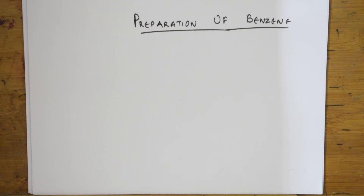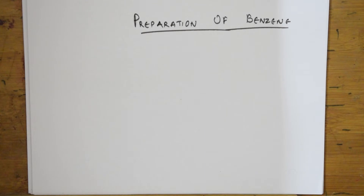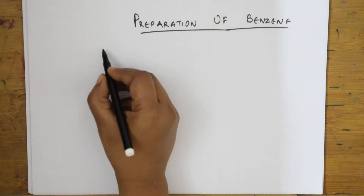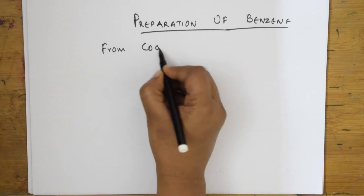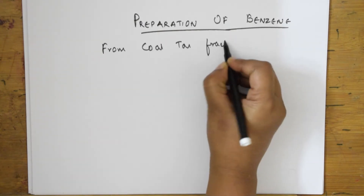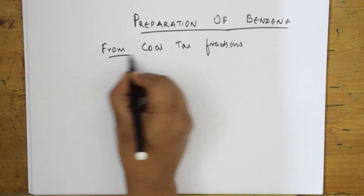Benzene structure we have also learned — different types of structures, please watch the previous video. The first important method of preparation is from coal tar fractions. I already gave in the previous video: light oil, middle oil, heavy oil, and the temperatures at which each product is obtained.